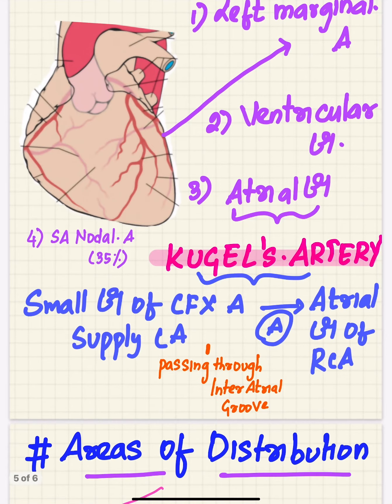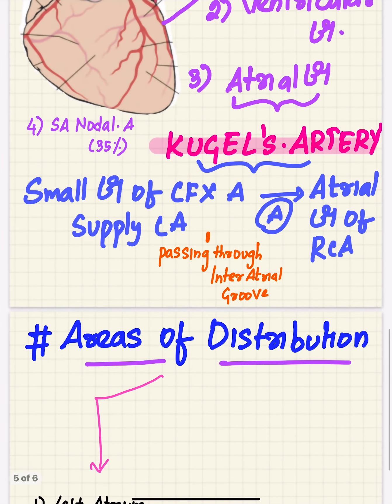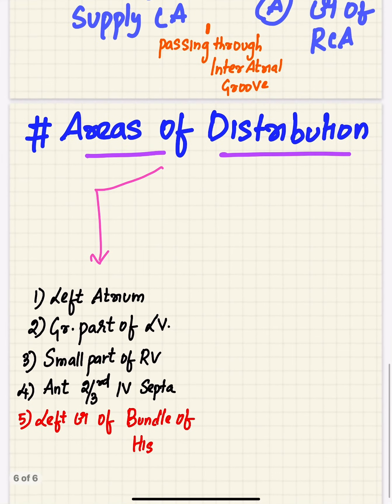Branches of the circumflex artery include the left marginal artery, ventricular branches, atrial branches, and the sinoatrial nodal artery, which supplies the node in 35% of cases. A special atrial branch is the Kugel's artery — a small branch of the circumflex artery that supplies the left atrium by passing through the interatrial groove, performing anastomosis with the atrial branch of the right coronary artery.